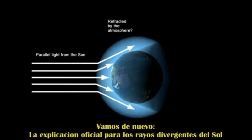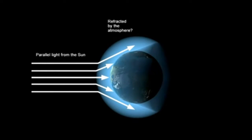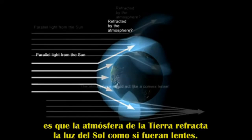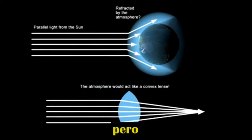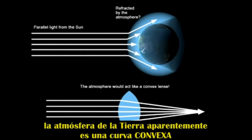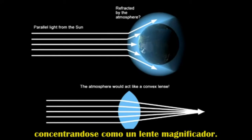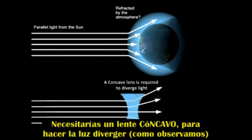The official explanation for diverging sun rays is that the Earth's atmosphere refracts the sun's light like a lens. But the Earth's atmosphere is apparently a convex curve, so that would act like a convex lens and converge the light, concentrate it like a magnifying glass. You'd need a concave lens to make light diverge as we observe.